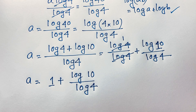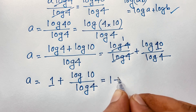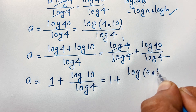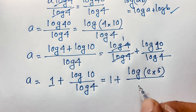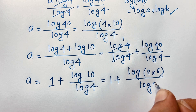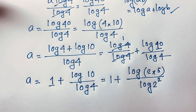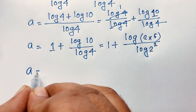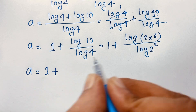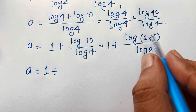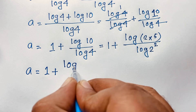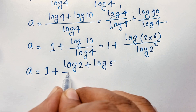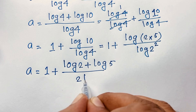Now, if I evaluate this expression further, it will be 1 plus log of 2 times 5 over log of 4, where 4 equals 2 to the power 2, so log 4 equals 2 log 2. Applying the product rule again, log(2 times 5) equals log 2 plus log 5, so A equals 1 plus (log 2 plus log 5) over 2 log 2.